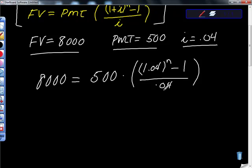This is the way I always do it. So I'm going to divide this by 500, and 8,000 divided by 500 is 16, so 16 is equal to 1.04 to the nth power minus 1. Remember this, minus 1 is not an exponential value, over 0.04.